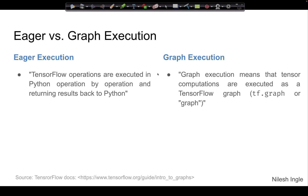Before we dive into what a graph is, I want to mention the terminologies: eager versus graph execution in TensorFlow. Eager execution means execution of Python code without the use of a graph that TensorFlow makes. Graph execution refers to computations that are done using a graph.